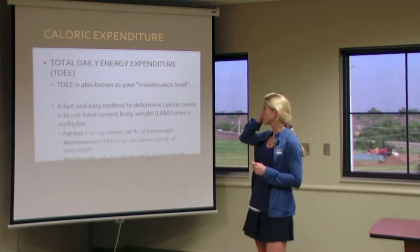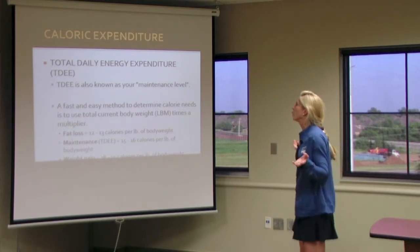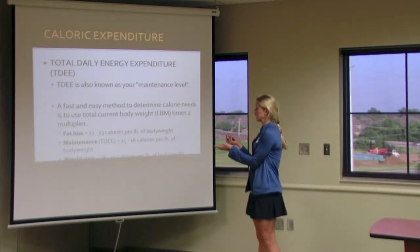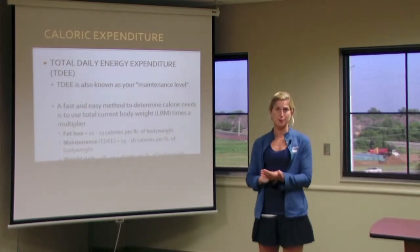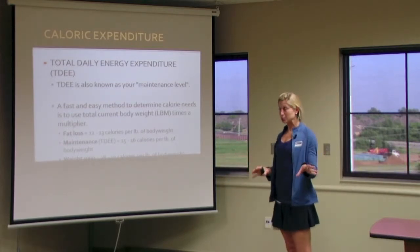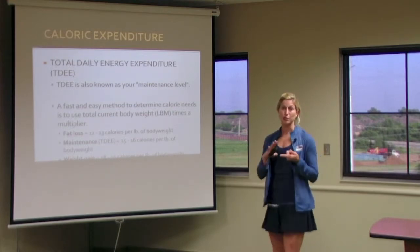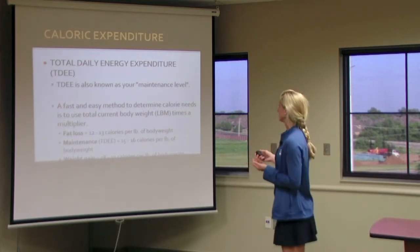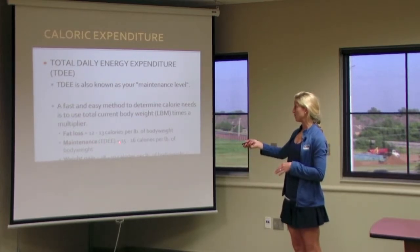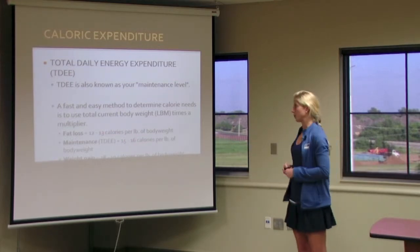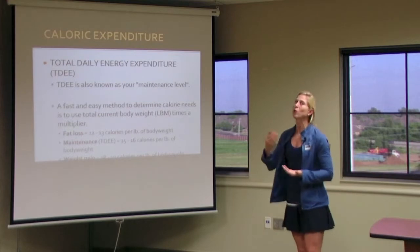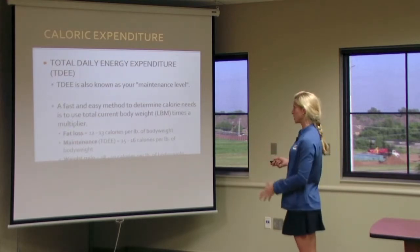Now we are going to look at total daily expenditure of our energy — TDEE, or total energy expenditure. The next equation looks at your maintenance level: not trying to lose weight, not trying to gain weight. This is an estimation of what your body needs based on your lean body mass and your weight. Maintenance is approximately 15 to 16 calories per pound of body weight. Fat loss requires fewer calories per pound, and to gain weight you need more calories so your body can store energy.